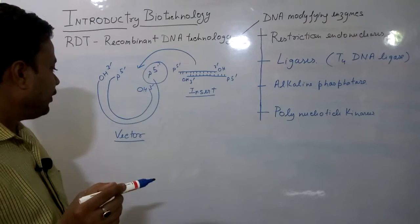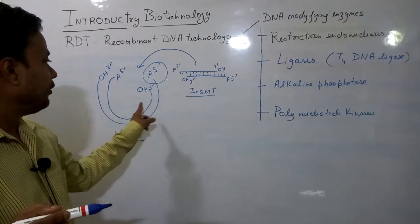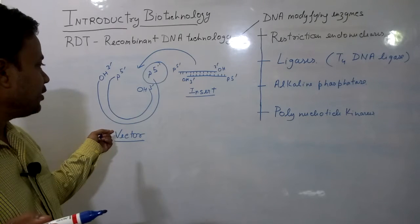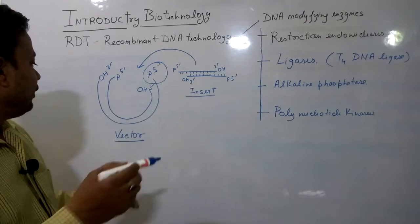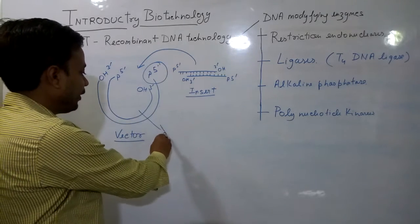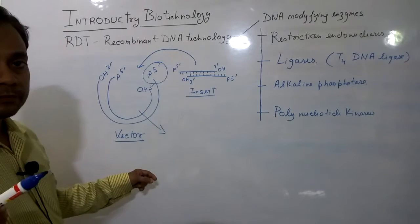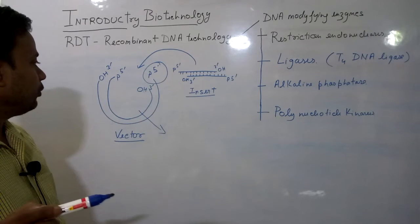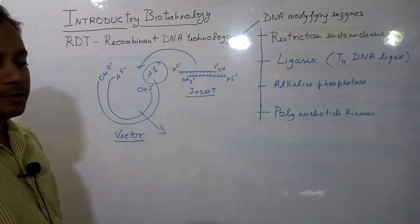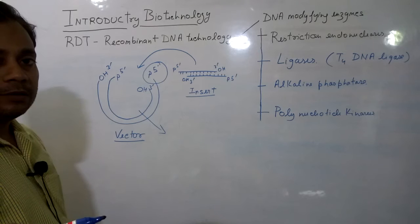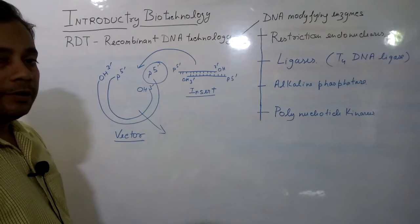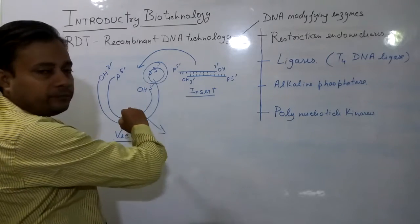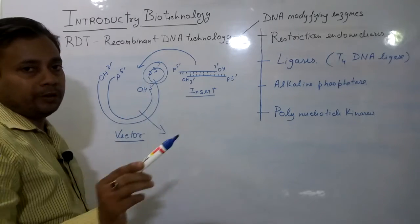When we tend to ligate a DNA molecule into a vector, the probability is high that the vector molecule will self-ligate, because with cohesive ends there is a possibility that the vector could self-circularize. To prevent this event, we need to remove the phosphate from the vector ends so that the tendency for self-ligation would be eliminated.